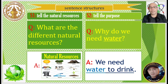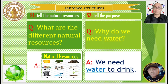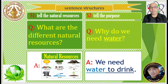For this lesson we have two sentence structures. Our first sentence structure is: Tell the Natural Resource — What are the different natural resources? Our second sentence structure is: Tell the Purpose — Why do we need water? We need water to drink.